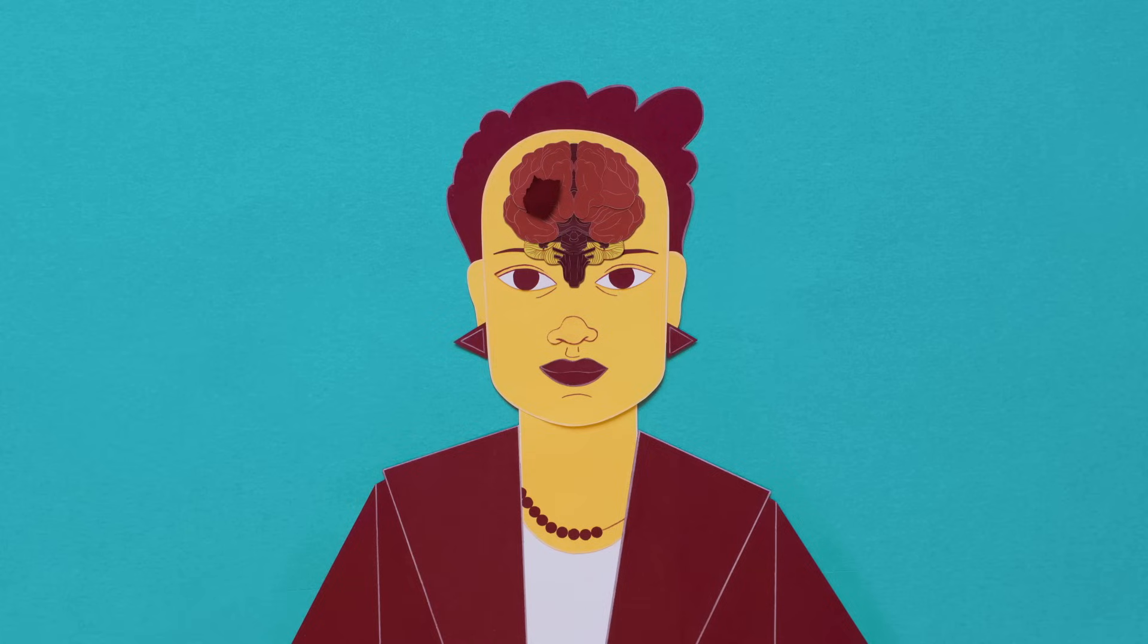Patients with hemispatial neglect, like P.S., typically have damage to one particular part of this network. More extensive damage to the network can sometimes lead to a vegetative state, with no sign of consciousness.